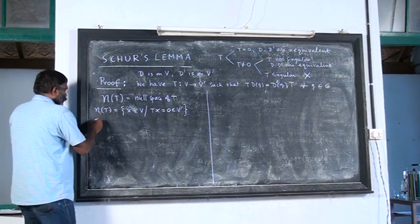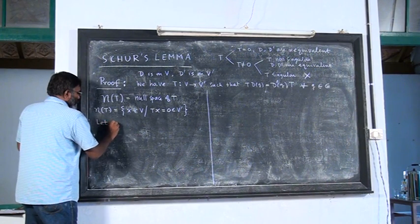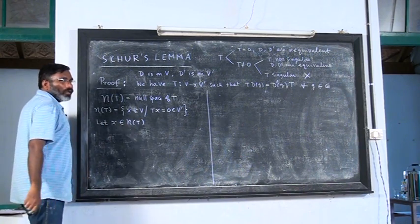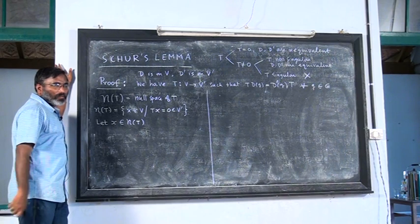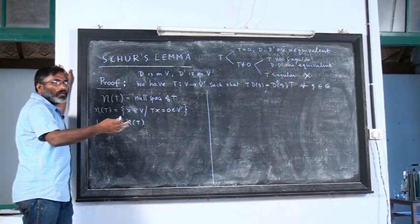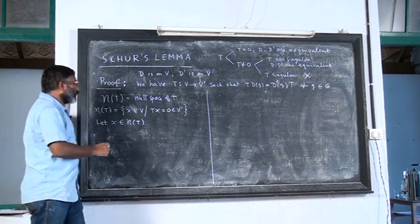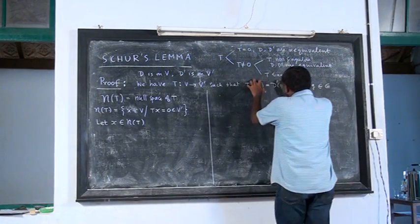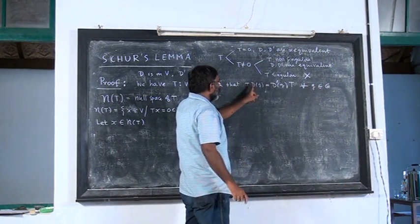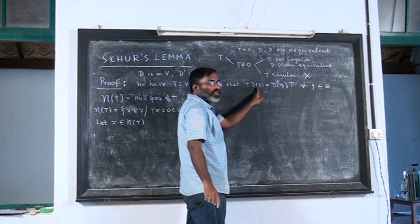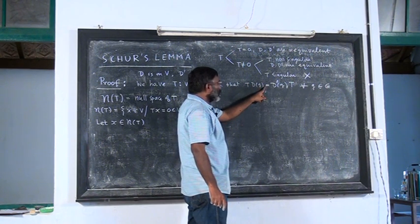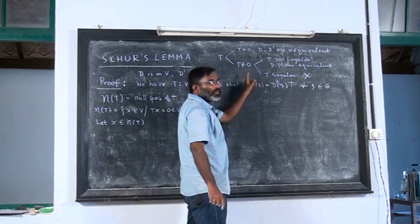Let x be in this null space. Take a vector from the null space and ask what happens if we act this operator on x. This first operator is a map from V to V, and T is a map from V to V prime. So if we act D_g on x we get a vector in V, and then T on that gives a vector in V prime.